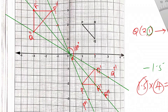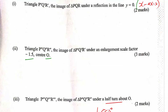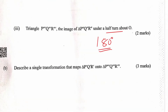Rechecking R: from R'' to center that is six squares, so from the center count 1, 2, 3, 4, 5, 6 — R''' will be there. Join all the points and you have the completed triangle: P''', R''', Q''' are all marked. That completes the rotation. The last question asks us to describe a single transformation that maps P'Q'R' to P'''Q'''R'''.